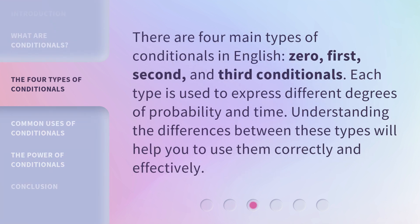There are four main types of conditionals in English: zero, first, second, and third conditionals. Each type is used to express different degrees of probability and time. Understanding the differences between these types will help you to use them correctly and effectively.